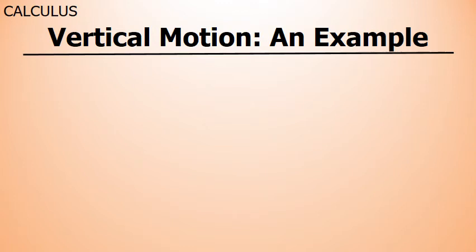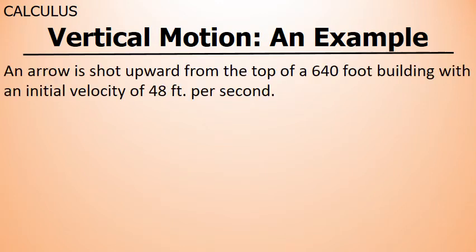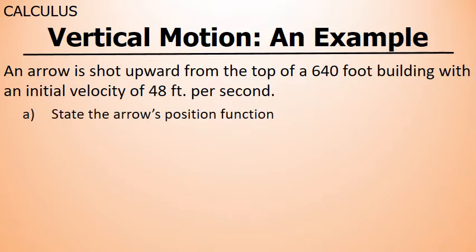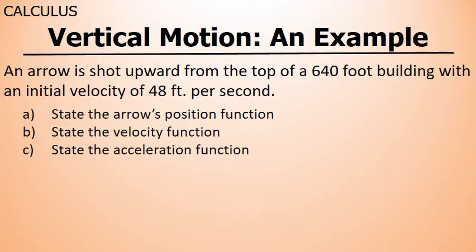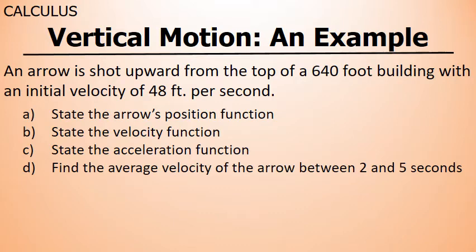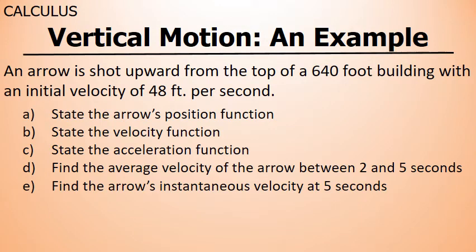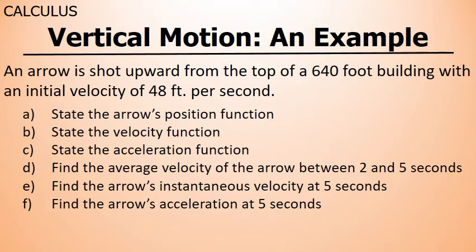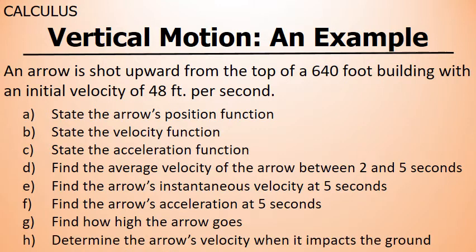This problem deals with vertical motion of a free falling object. An arrow is shot upward from the top of a 640-foot building with an initial velocity of 48 feet per second. We're going to state the arrow's position function, the velocity function, and the acceleration function. We'll find the average velocity between two and five seconds, the instantaneous velocity at exactly five seconds, the acceleration at that same moment, how high the arrow goes, and the arrow's velocity when it hits the ground.